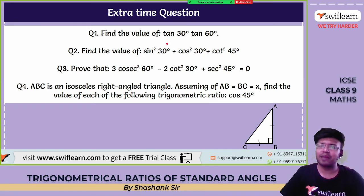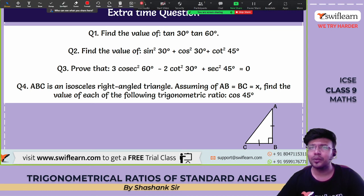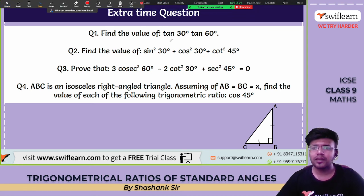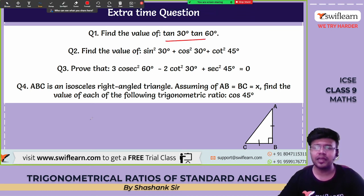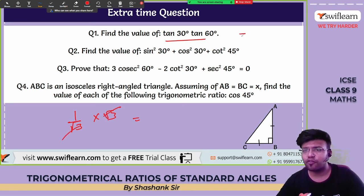Extra practice question 1: find the value of tan 30° × tan 60°. Tan 30° = 1/√3 and tan 60° = √3. These cancel, so the value is 1.